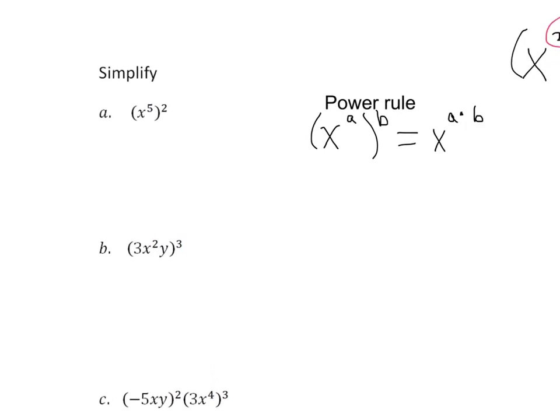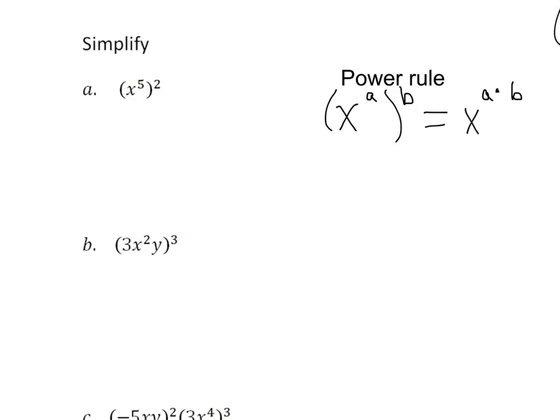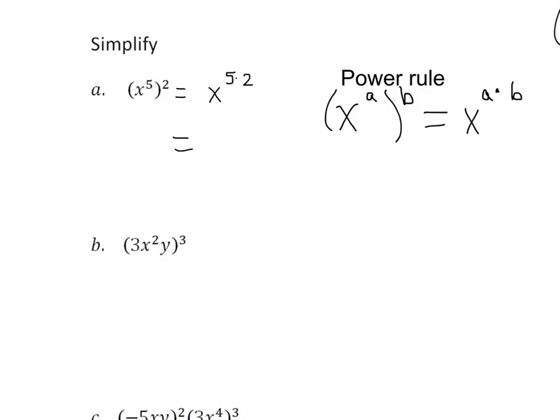So let's go take a look at a few of these. The first one is pretty simple. When we have x to the 5th and we square that, that's going to be x to the 5 times 2. Multiply 5 times 2, we get x to the 10th power, right? So that's the answer for the first one. It's going to be x to the 10th.